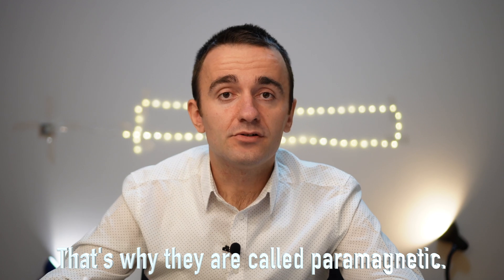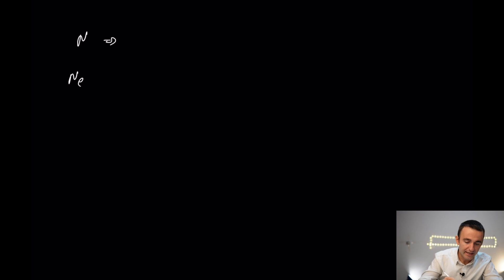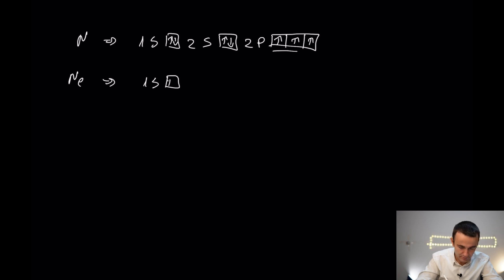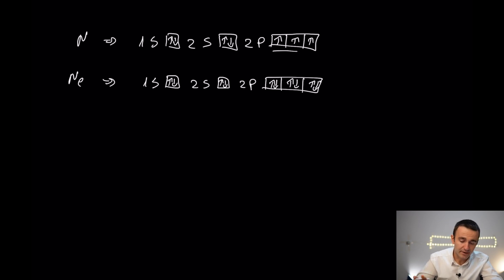The last thing to point out is paramagnetism and diamagnetism. Substances that have unpaired electrons are weakly attracted by the magnetic field — these are paramagnetic. Substances where all electrons are paired are diamagnetic. Do not confuse ferromagnetism with these two properties, because ferromagnetism is tens or thousands of times more powerful than paramagnetism and diamagnetism. For example, nitrogen has unpaired electrons so it's paramagnetic, while neon has all electrons paired so it's diamagnetic.